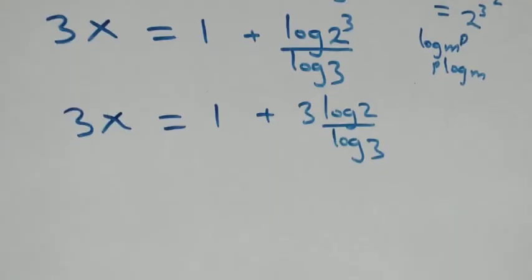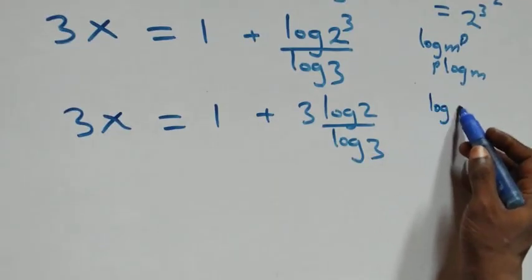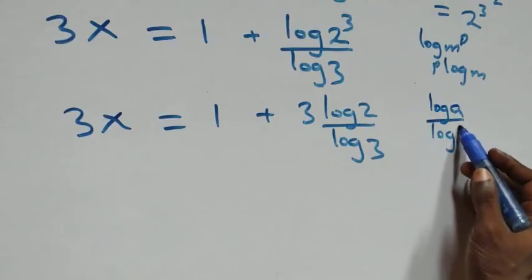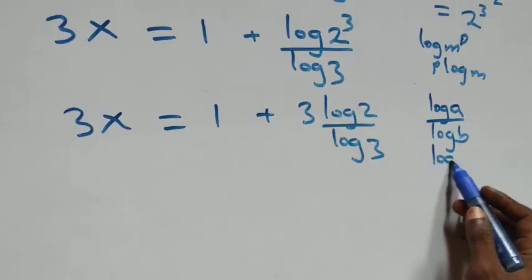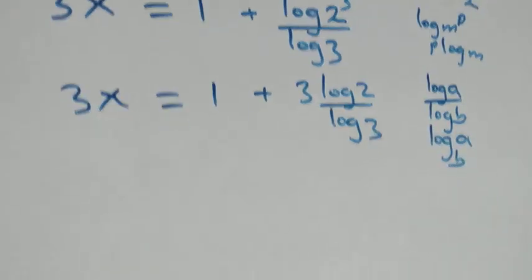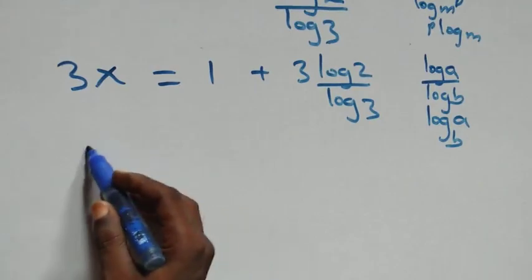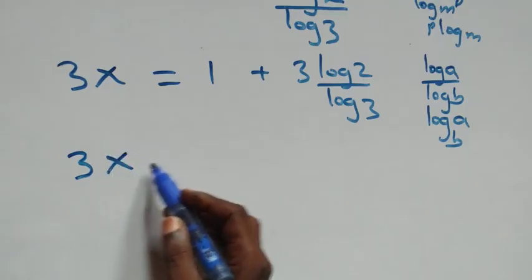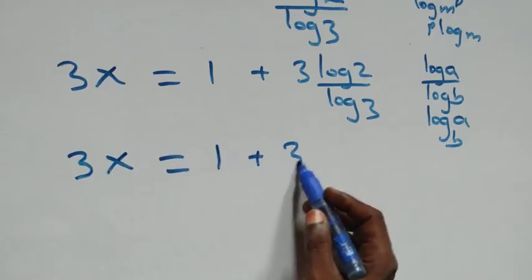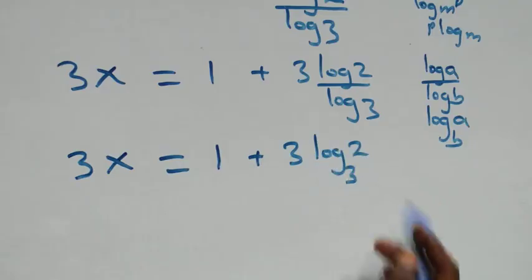And here we apply change of base: log a over log b is the same thing as log a to base b. So what we have here becomes 3x equals to 1 plus 3 log 2 to base 3.